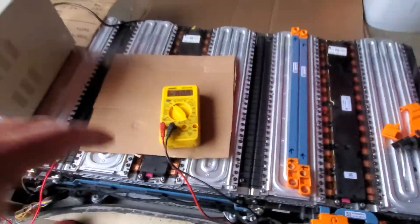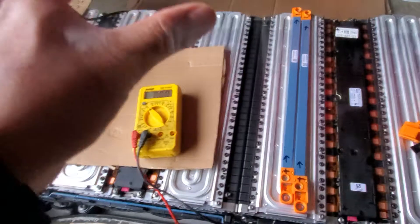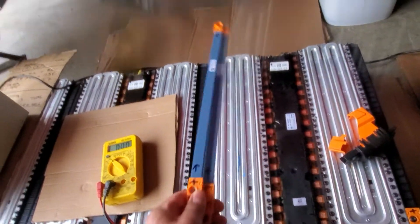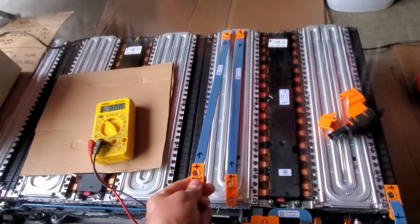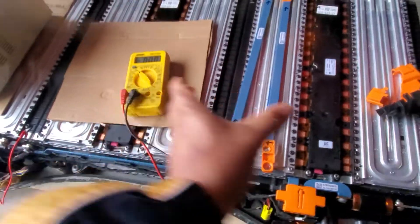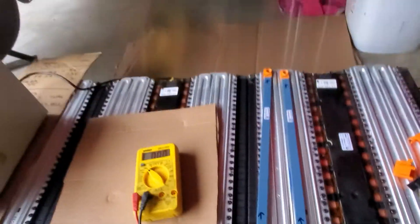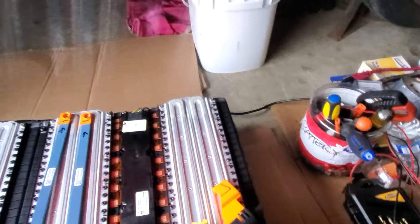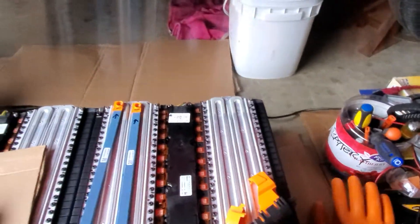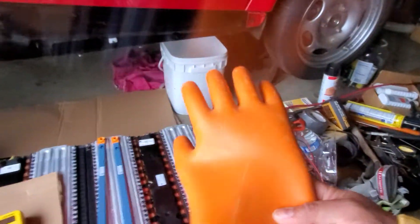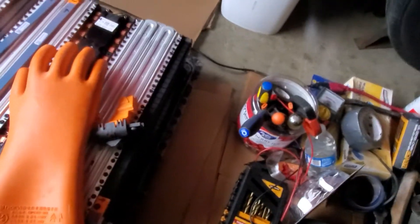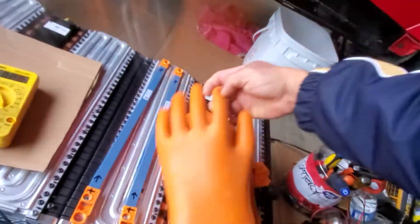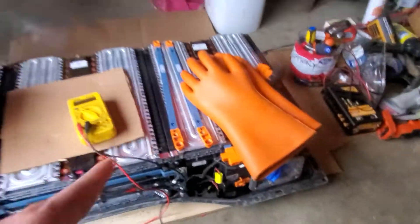But I separate each, I separate each module. So as you can see, I removed the connector on each module right here guys. So if I put this one, 32 and 92, that's already more than 110 volts. So I really need to use this special insulating gloves if I connect all of them.